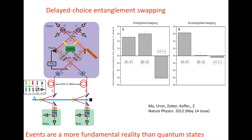The next picture, delayed choice entanglement swapping, shows the experimental result. The important point is that if you see entanglement between the outermost photons, you have correlations in all three mutually unbiased bases, shown in the bars on the right-hand side. If not, the far-right pair shows correlation only in one case.